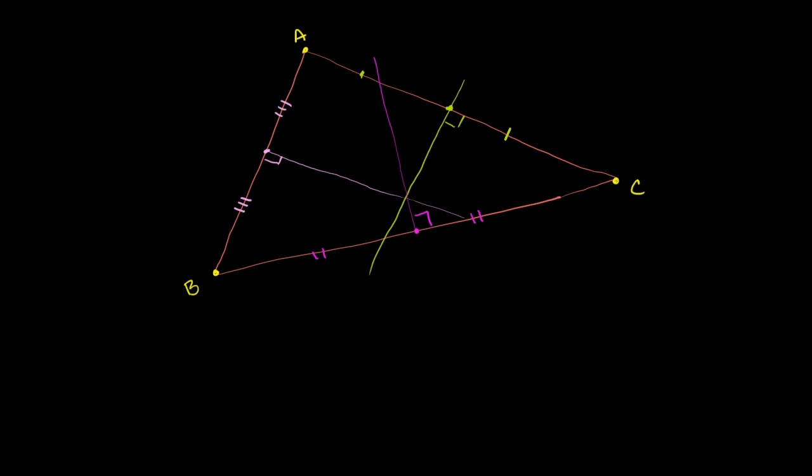And we've already learned that these three lines will definitely intersect in a unique point right over there, which we call the circumcenter. So let me write it. So this right over there is our circumcenter. This is nothing new. Circumcenter.